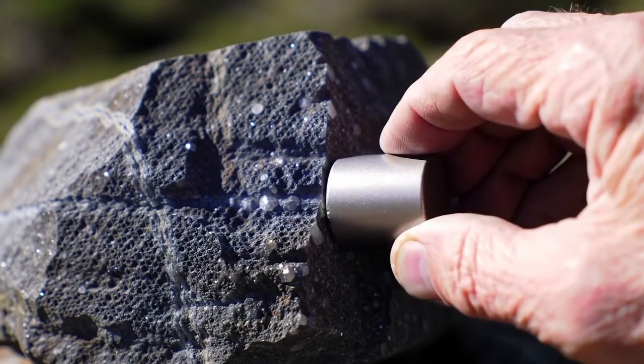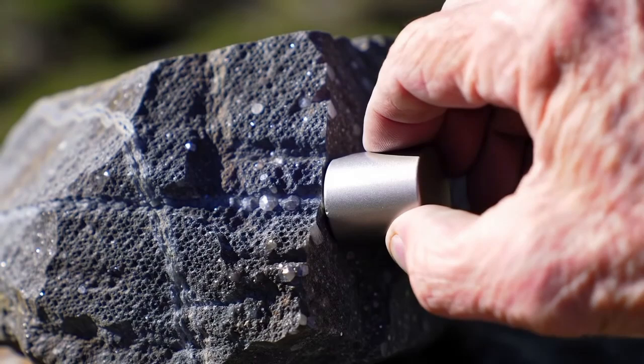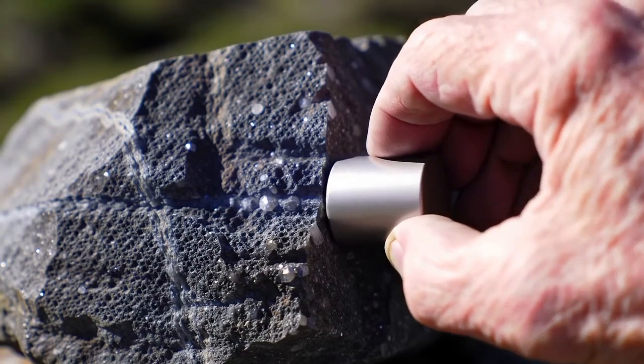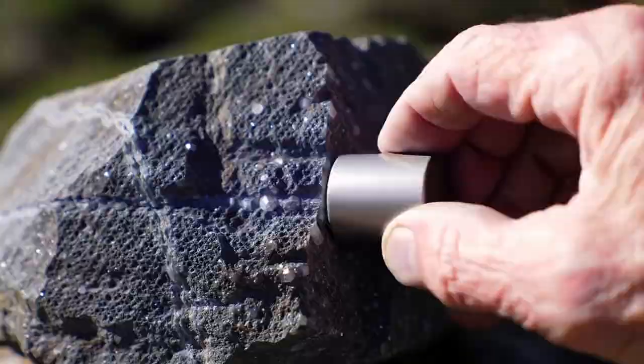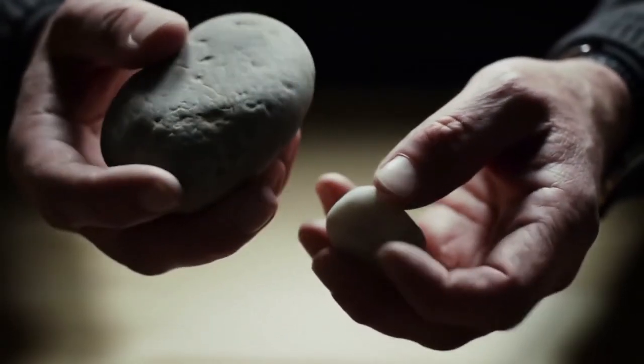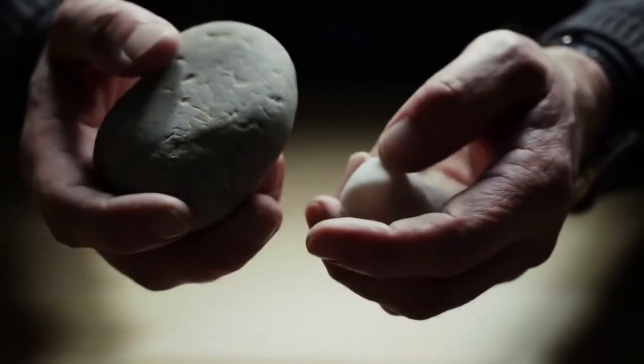Magnet test. Most meteorites contain iron and nickel, which makes them magnetic. Use a small magnet and bring it close to the rock. If it is strongly attracted, it's a good sign, but not absolute proof, as some earth rocks also contain iron.